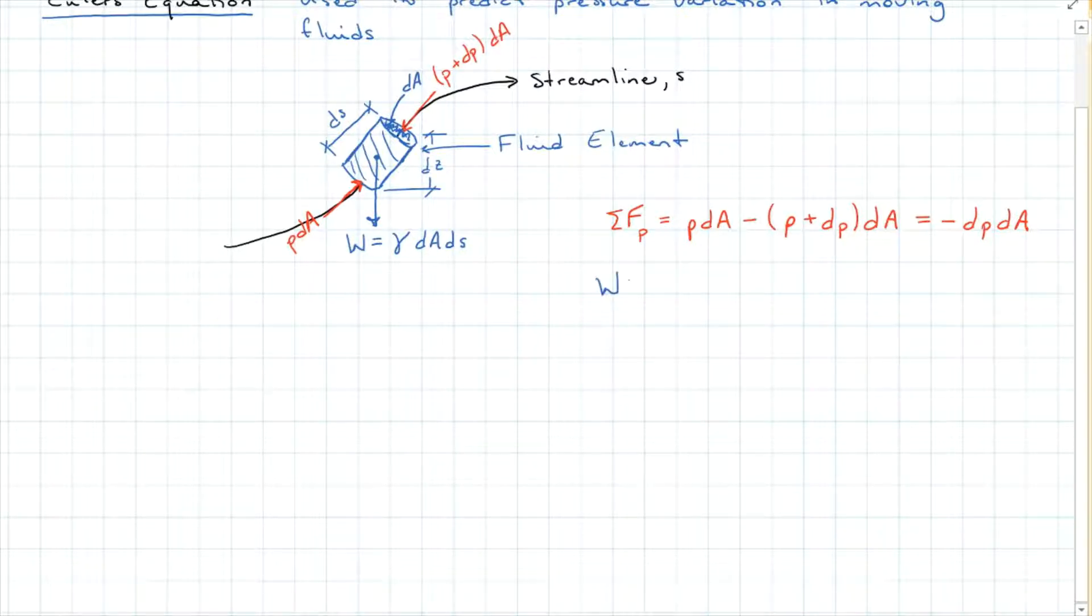The work of the weight is going to be the specific weight gamma dA dS, and then that change in height over that distance. So we end up with gamma dA dz, or acting in the negative direction because it's pointing down, or rho g dA dz if we want that density in there.